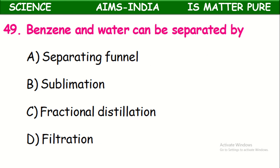Benzene and water can be separated by which method? Benzene is an organic substance in liquid phase which is not soluble in water. So a benzene-water mixture is an immiscible liquid-liquid mixture. The mixture of two immiscible liquids can be separated using an instrument called a separating funnel. By using a separating funnel, we can separate benzene and water.